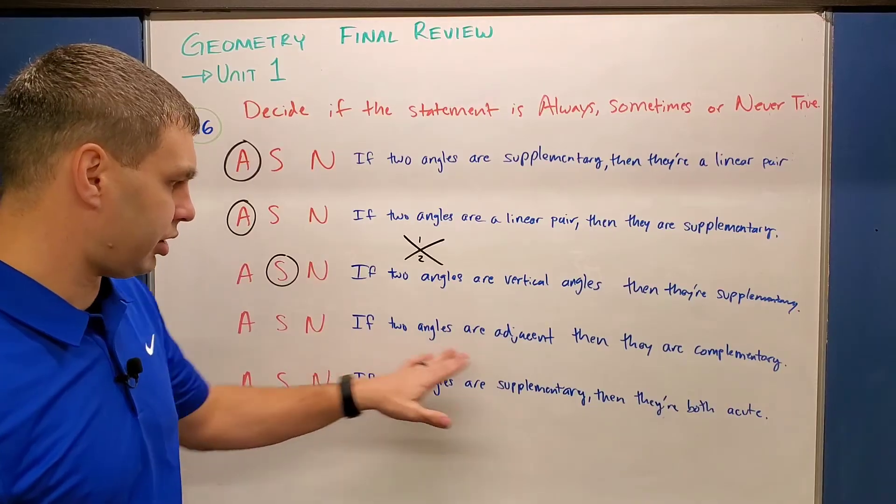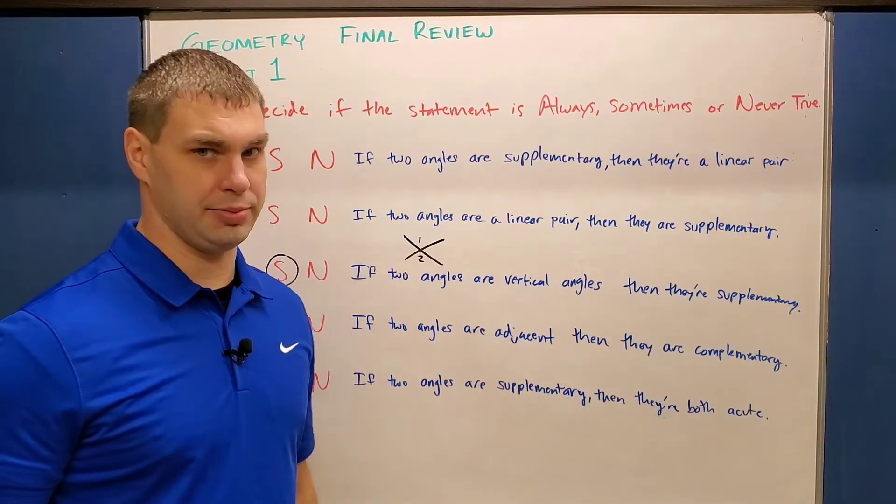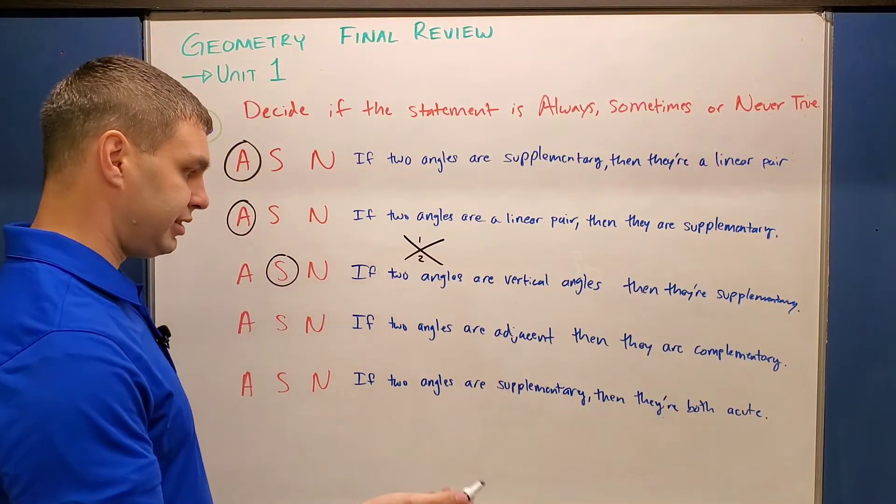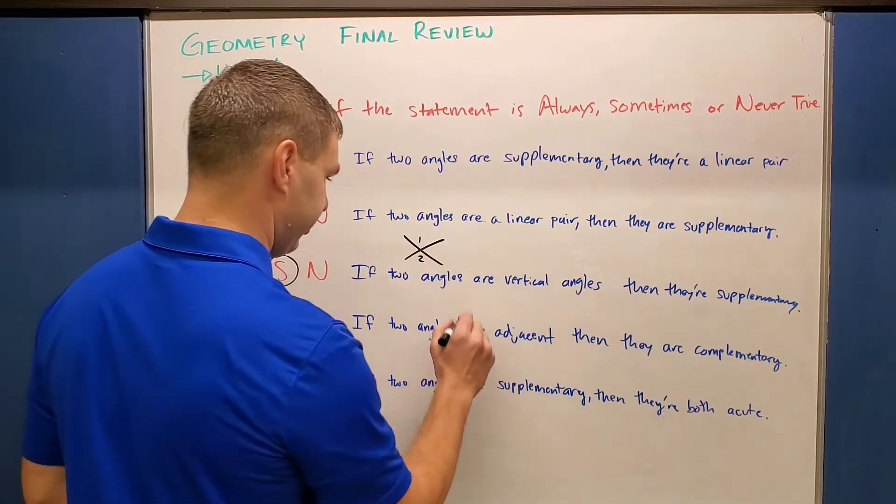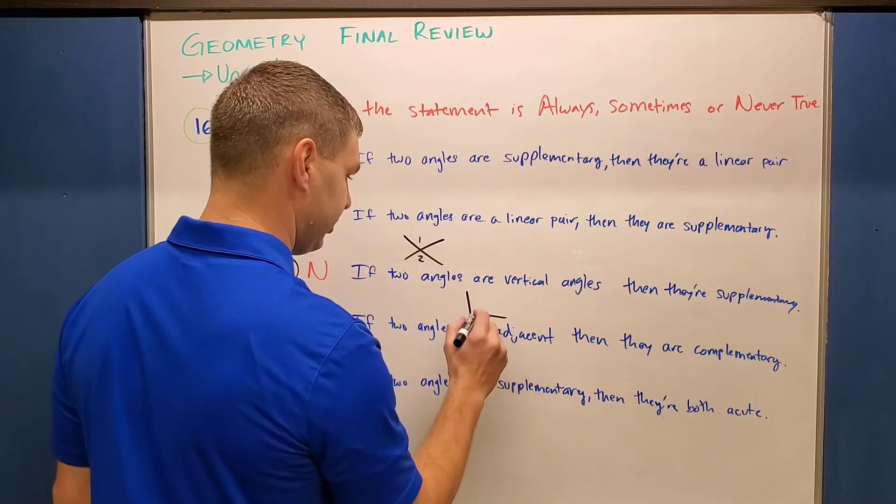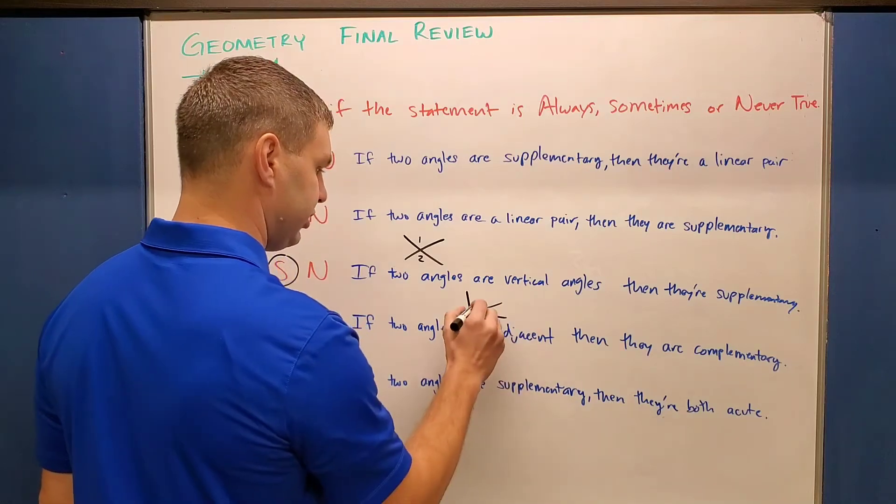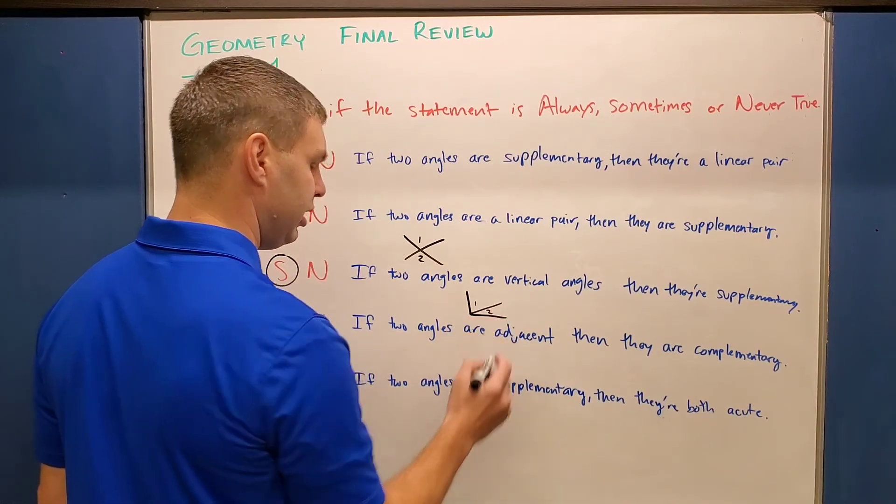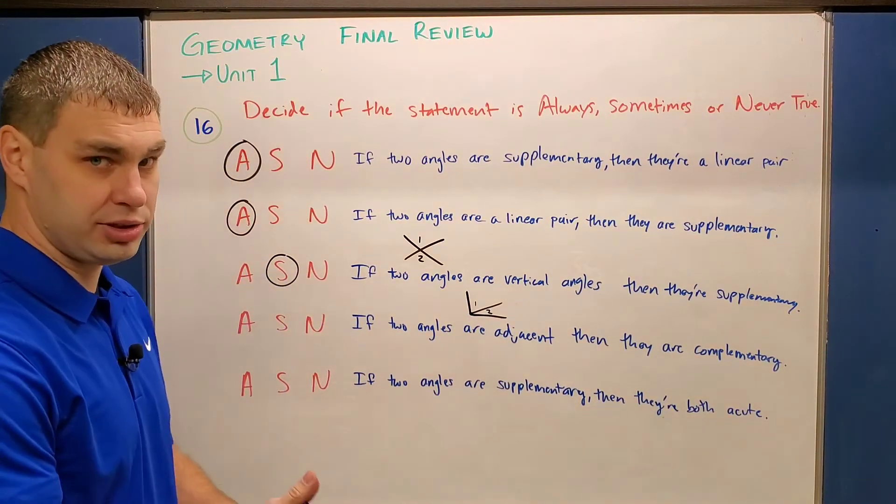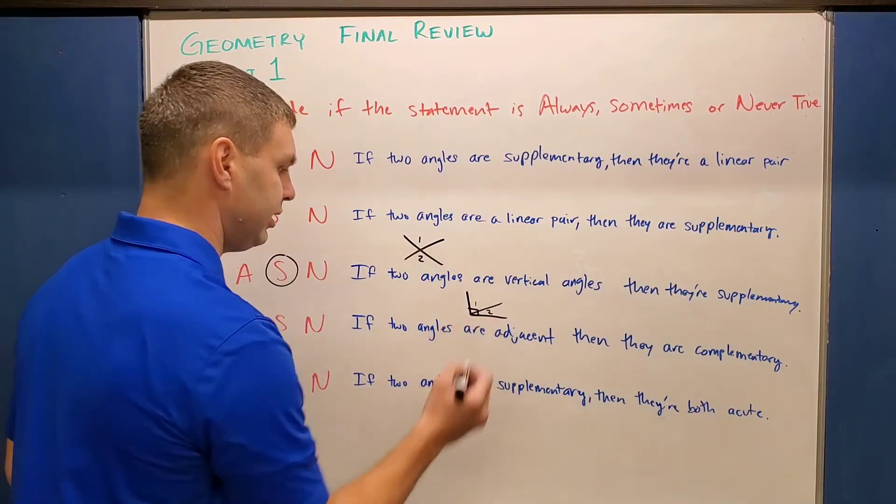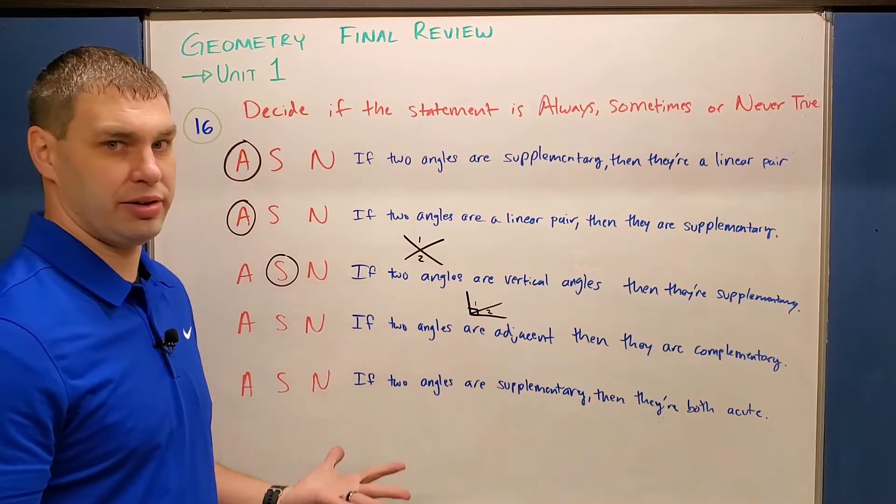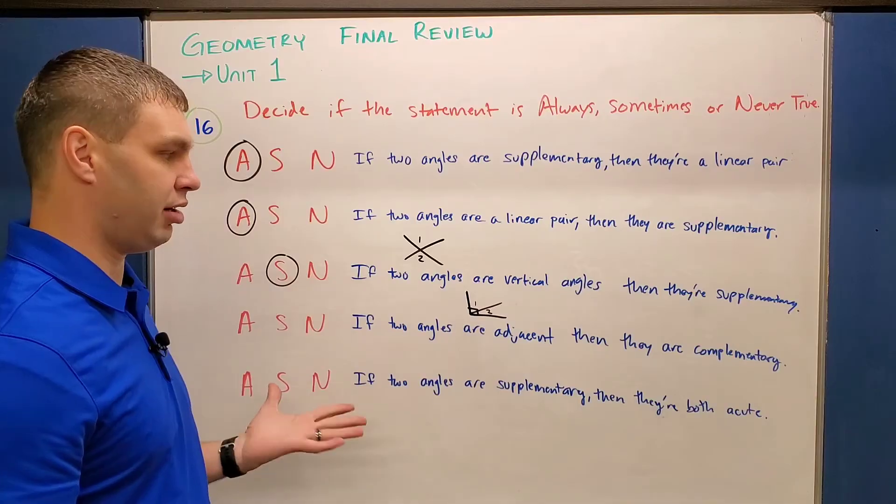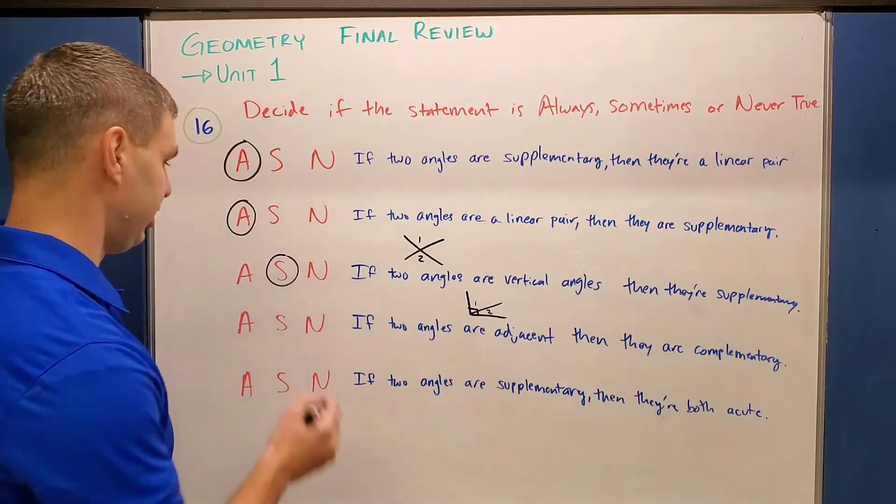Next one, if two angles are adjacent, then they are complementary. Well, adjacent just means next to each other. And that could happen if we have, maybe a right angle and I divide it into two. Well, these two next to each other, angles one and two, they are definitely adjacent. They're next to each other and they're definitely right. But I can make two other angles that are adjacent that are not complementary. So again, this is just sometimes true.